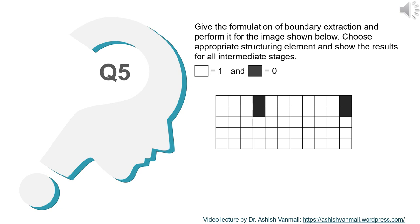So let's look at the question. The question is: give the formulation of boundary extraction and perform it for the image shown below. Choose appropriate structuring element and show the results for all intermediate stages. They have given an image over here and said that the white blocks are 1 and the grey blocks are 0.